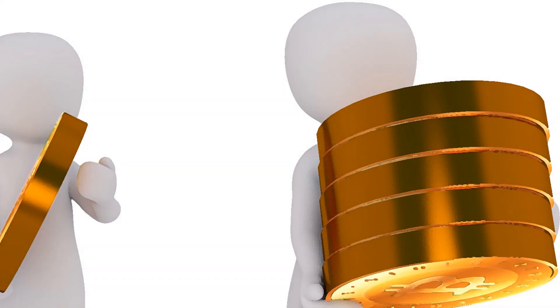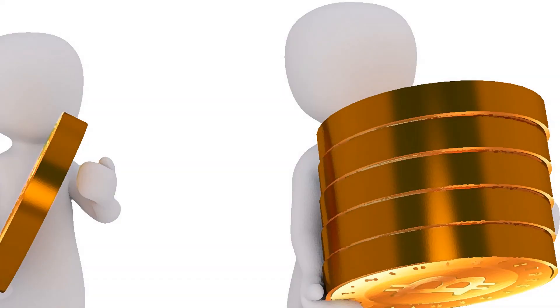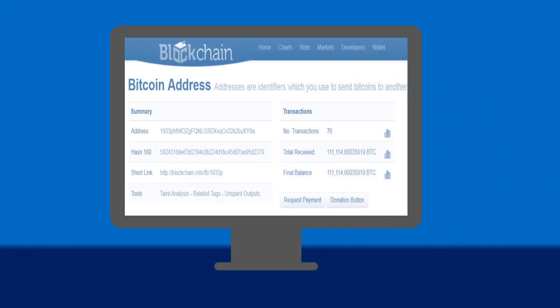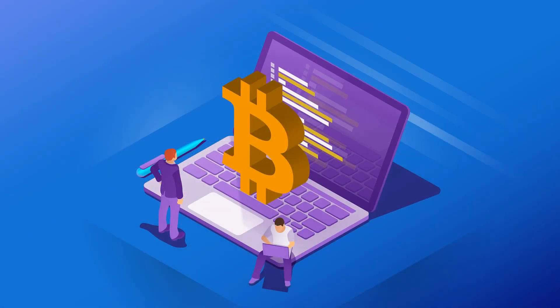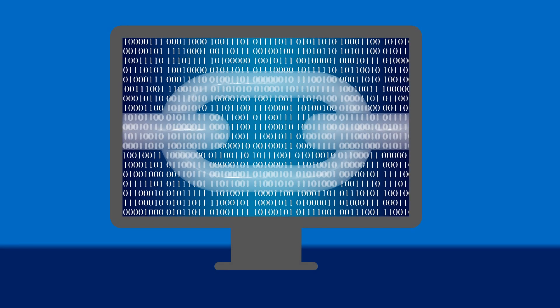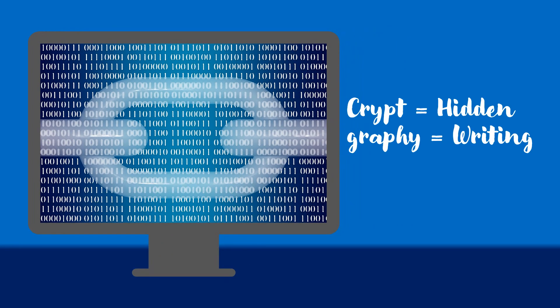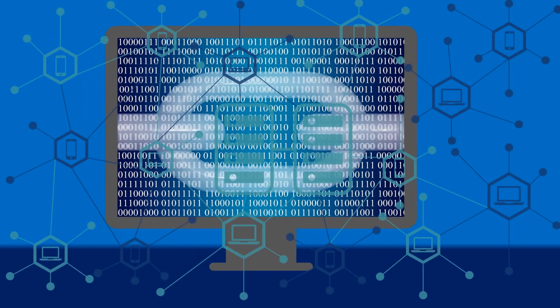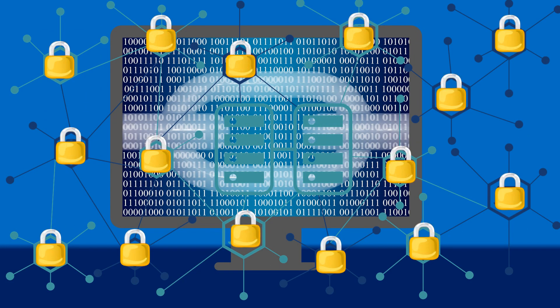Bitcoin is not any coin, but only transactions and balances. All can see all the transactions, but can't see who is behind each transaction. In Bitcoin, the technology of cryptography is used, which helps to encode all the transactions. Crypt means hidden, and graphy means writing. Using cryptography, information can be protected and only intended persons can read and process it.